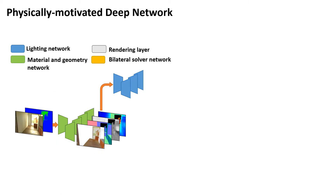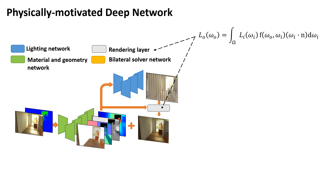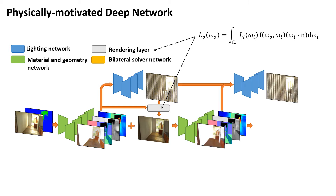We build a physically motivated deep network that models the image formation process. Our local lighting representation allows a fast in-network differentiable rendering layer to render the image from the predictions. Based on the feedback provided by the rendering layer, we build a cascade structure to iteratively refine our predictions.